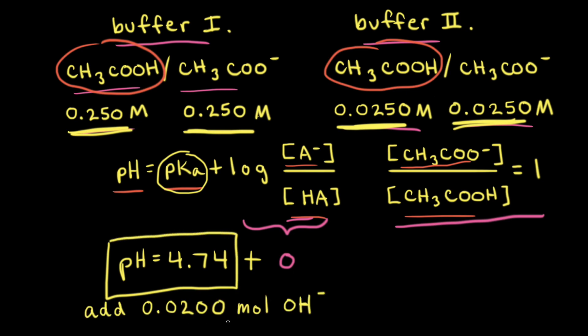So we're starting with two buffer solutions each at a pH of 4.74, and to those buffer solutions we're going to add 0.0200 moles of hydroxide anions. By calculating the pH change after adding the hydroxide anions we'll be able to see which buffer has the higher buffer capacity. The added hydroxide anions will be neutralized by the weak acid present in the buffer system, which is acetic acid. So acetic acid is going to react with the hydroxide anions.